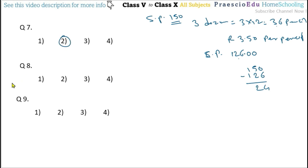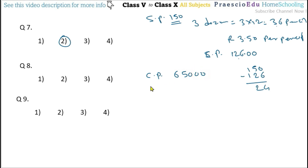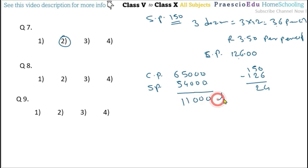Question number 8. A car is purchased for rupees 65,000 and sold for rupees 54,000. How much was the loss? CP is 65,000 and SP is 54,000. SP is less than CP, so there is a loss. 65,000 minus 54,000 equals 11,000. So the loss of rupees 11,000 is given in option number 4.